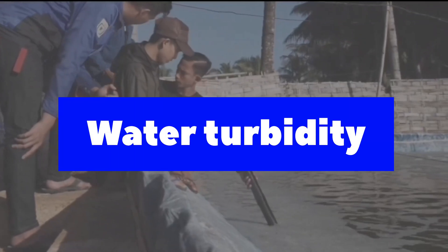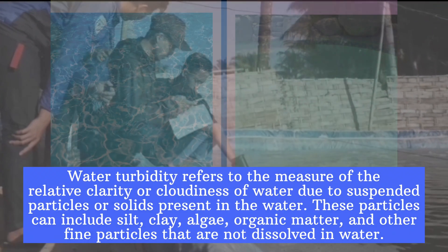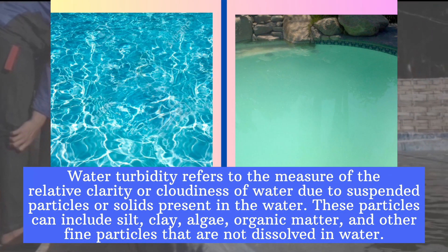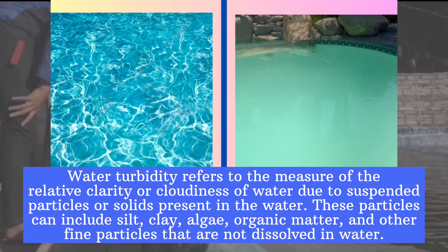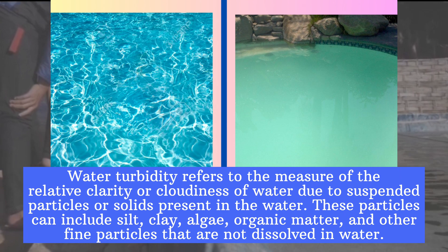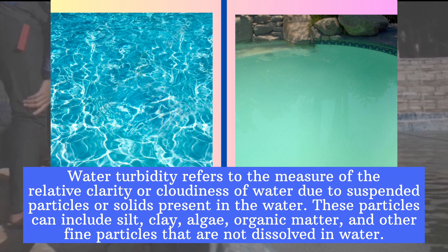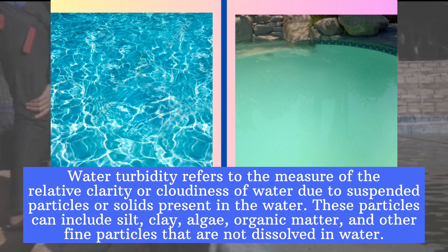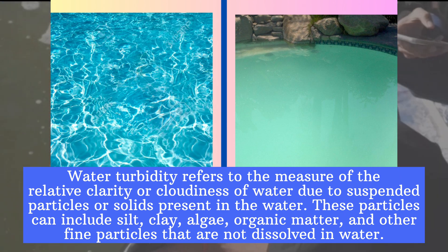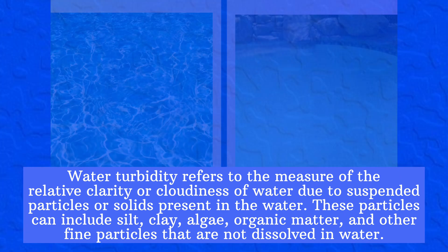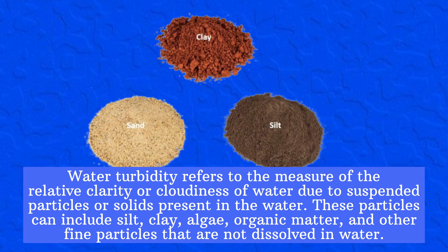Water turbidity refers to the measure of the relative clarity or cloudiness of water due to suspended particles or solids present in the water. These particles can include silt, clay, algae, organic matter, and other fine particles that are not dissolved in water.